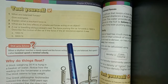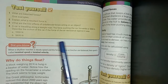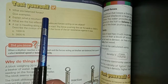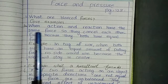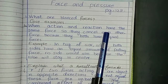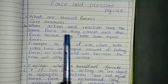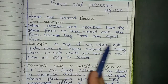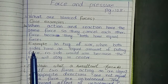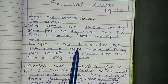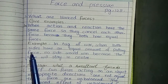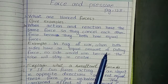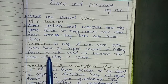Let's see the first question: What are balanced forces? Give an example. When action and reaction have the same force, they cancel each other out because they both have equal forces. Example: In a tug of war, when both sides have an equal amount of pulling force, no side would win.